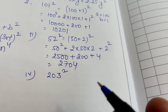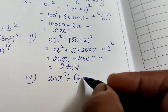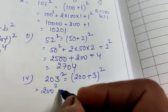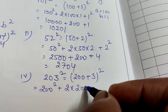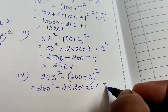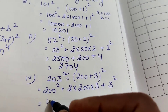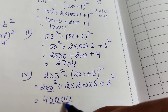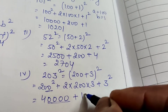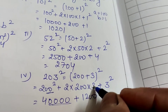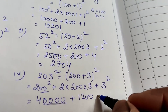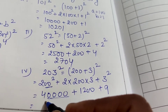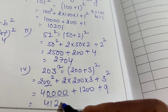The next one is 203². Write it as (200 + 3)². Using identity 1: square of first number, plus 2 times the product, plus square of second. 200² = 40000. Then 2 × 200 × 3 = 1200. And 3² = 9. Adding: 40000 + 1200 + 9 = 41209.